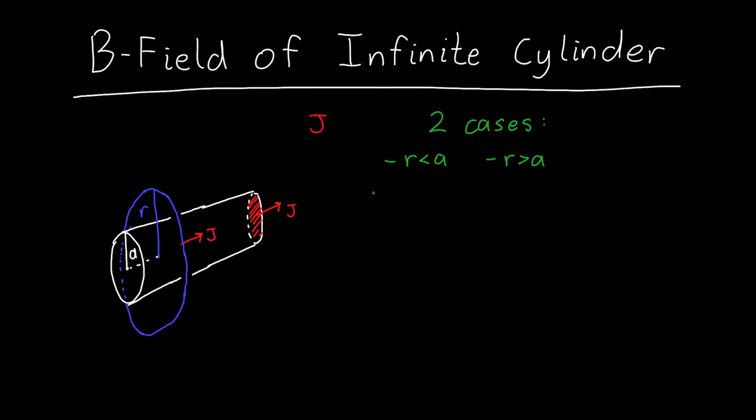So how do we solve this problem? Well, because it's got a high degree of symmetry, this means that we can use Ampere's law. And remember that Ampere's law says that the integral of B dot dr is equal to mu naught times the current that penetrates through the surface that we choose. And this integral is over a closed curve.